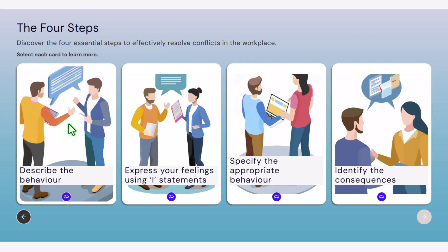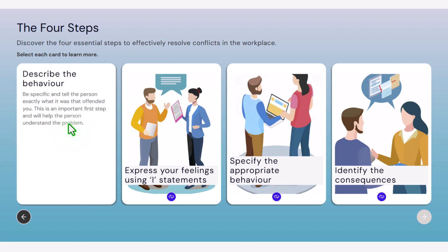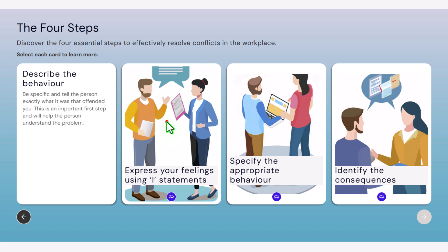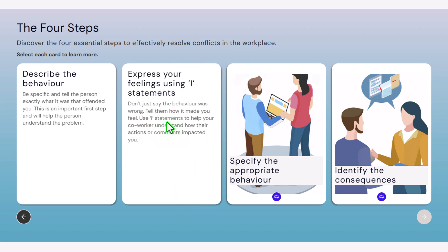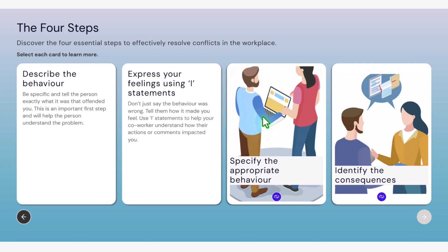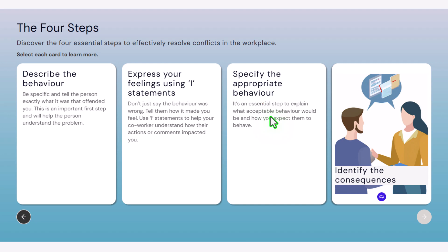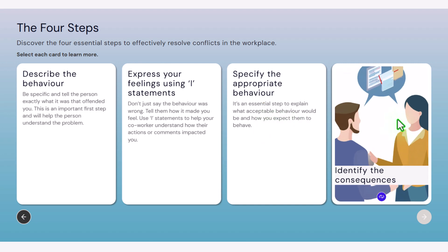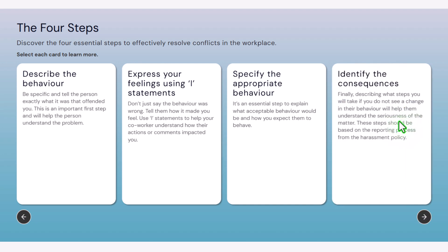Let's flip our first card over. 'Be specific and tell the person exactly what it was that offended you. This is an important first step and will help the person understand the problem.' The second: 'Don't just say the behavior was wrong — tell them how it made you feel. Use I statements to help your coworker understand how their actions impacted you.' Third: 'It's an essential step to explain what acceptable behavior would be and how you expect them to behave.' Fourth: 'Describing what steps you will take if you do not see a change in their behavior will help them understand the seriousness of the matter. These steps should be based on the reporting process from the harassment policy.' Now the Next Slide button is available because I've clicked on all four of these.